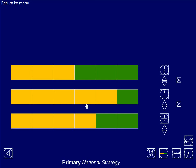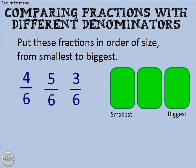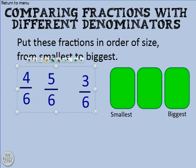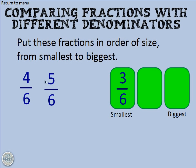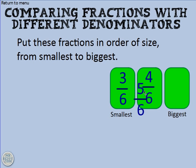We can see that the smallest one is three sixths, the largest one is five sixths, and the one in between is four sixths. So we need to put them in this order: three sixths, four sixths, and five sixths. Done.